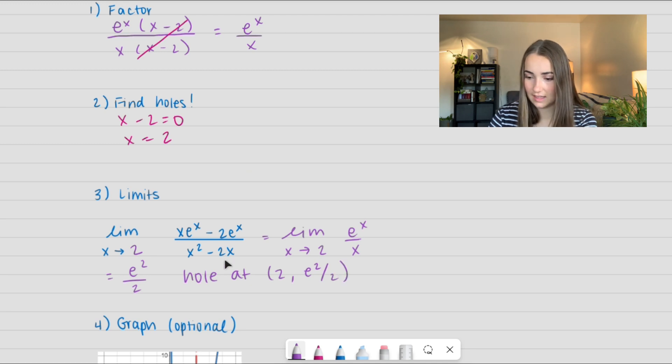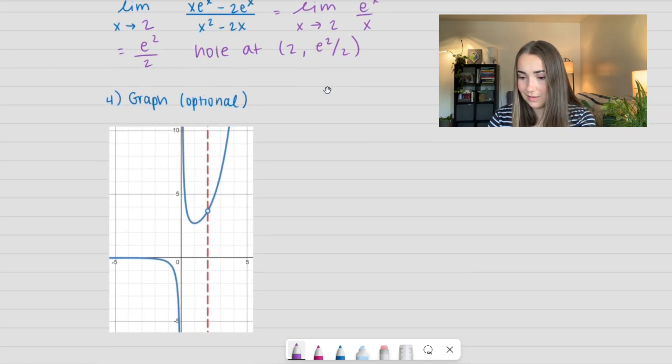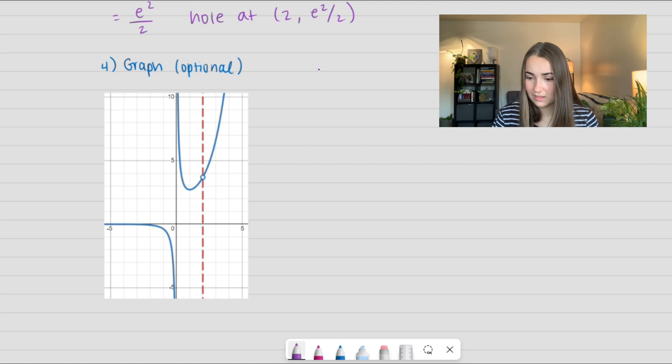Let's go ahead and see that in the graph. This one's a bit funky. So this right here is x = 2 and I guess this is e²/2. I don't really know what e² is off the top of my head. I think it's like 7 point something. But anyhow, that is what we're looking at here.